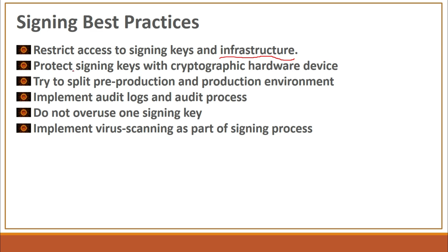Second, protect the signing keys with a cryptographic hardware device. As mentioned, access to the signing keys is supposed to be protected with the help of a cryptographic hardware device — could be an HSM or any other. Third, try to split pre-production and production environments, meaning the signing keys used for pre-production and production should be separate. Pre-production keys should not be used in production or vice versa. Fourth, implement audit logs and audit processes. In terms of DevSecOps, access to the HSM or signing keys should be logged — what was signed, when it was signed — and these things should be auditable.